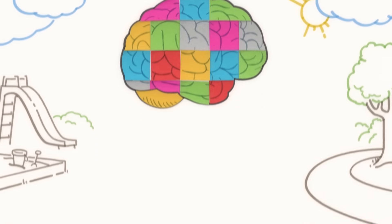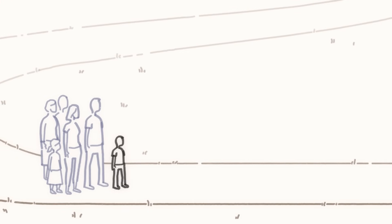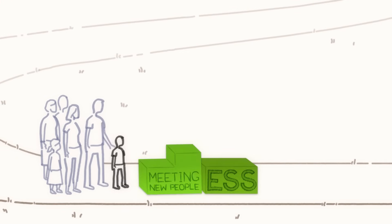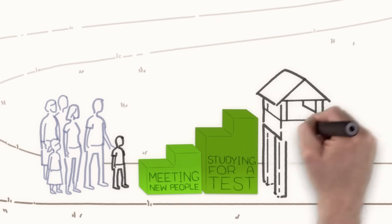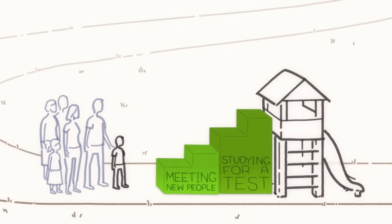But another kind of childhood experience shapes brain development too, and that's stress. Good kinds of stress, like meeting new people or studying for a test, are healthy for development because they prepare kids to cope with future challenges.